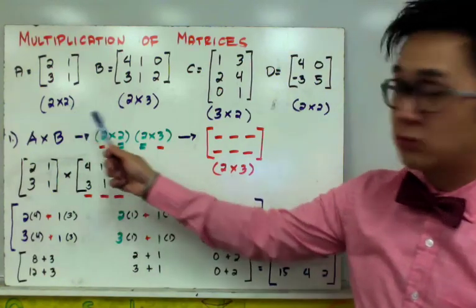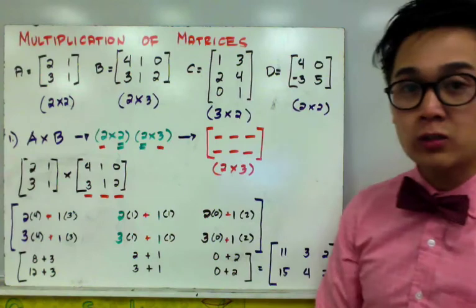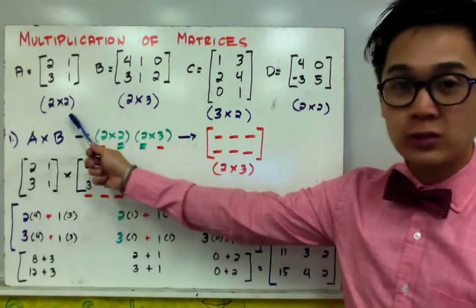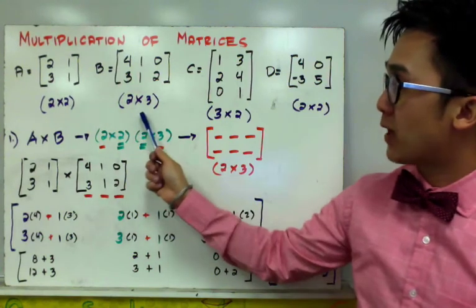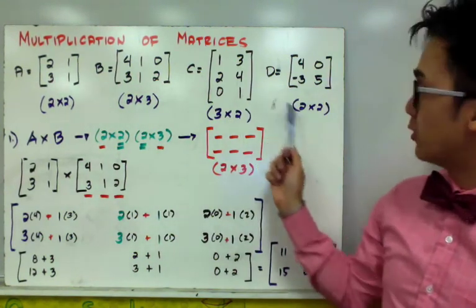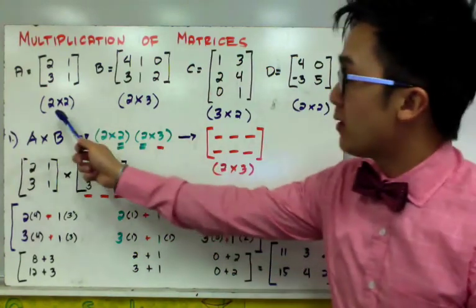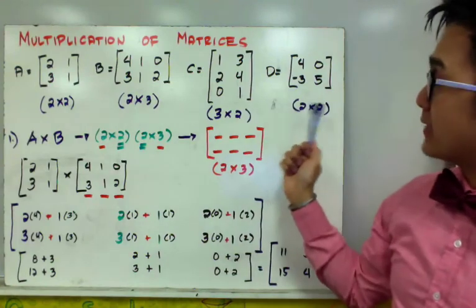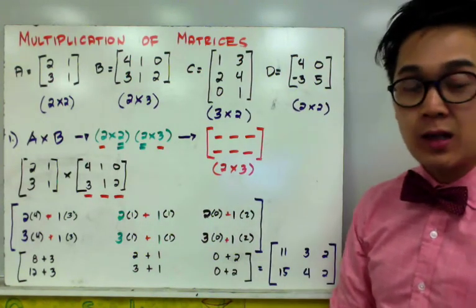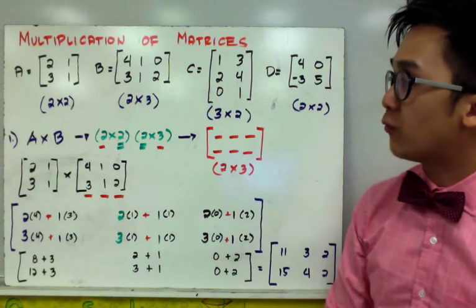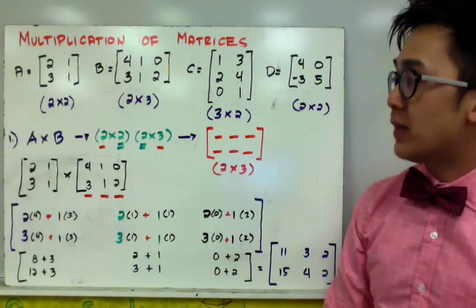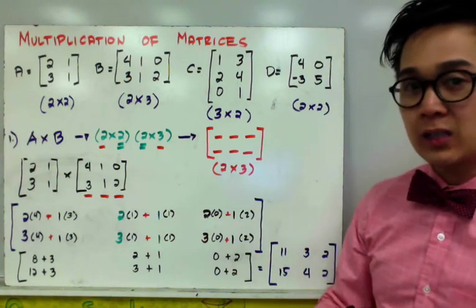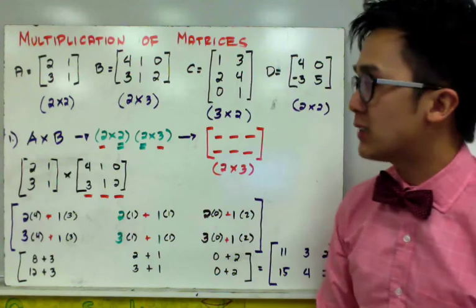Now, in my examples right here, I have four matrices that we're going to combine today through multiplication. If you'll notice, matrix A is a 2 by 2 matrix, B is a 2 by 3, C is a 3 by 2, and D is another 2 by 2. Even though they have different orders, we can still combine them by multiplication by first verifying if we can combine the two matrices together. So let's have the first example.